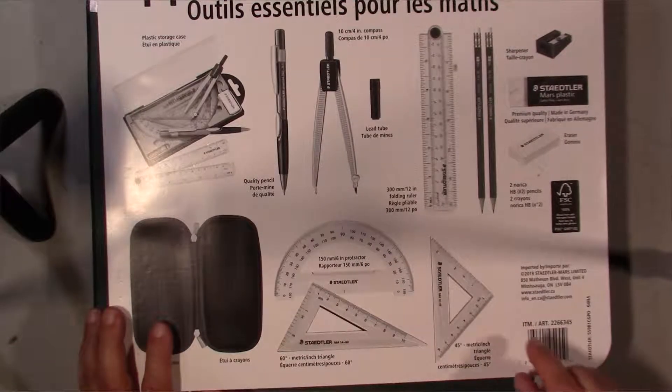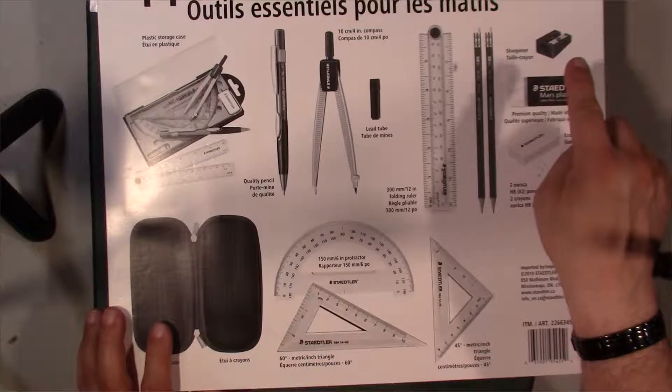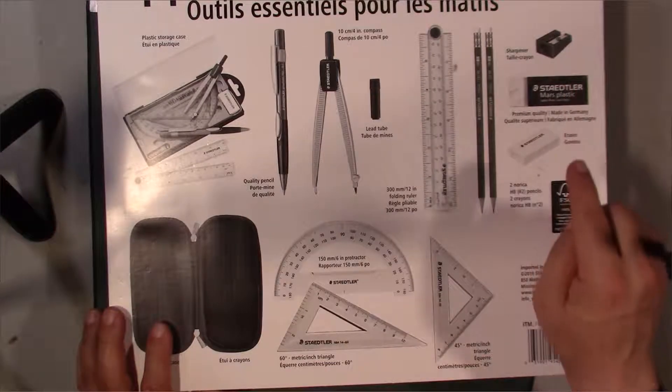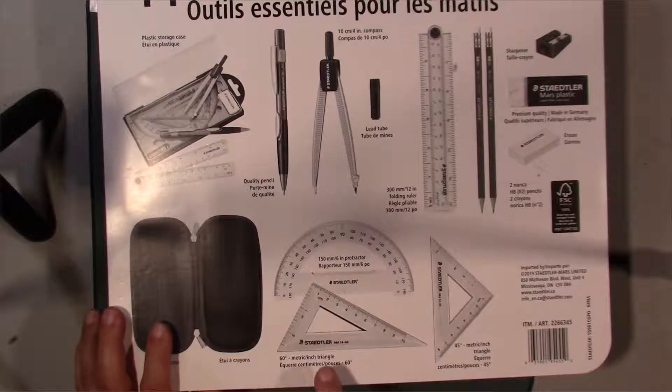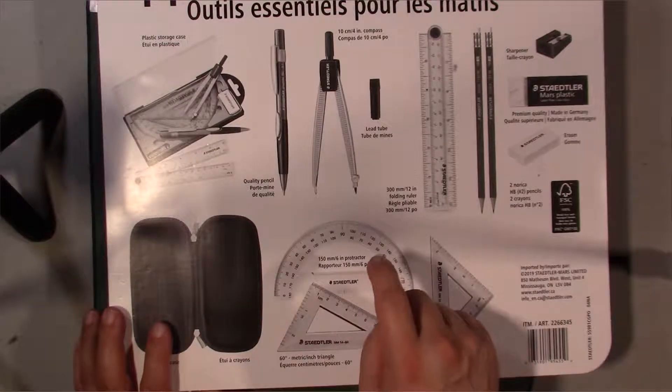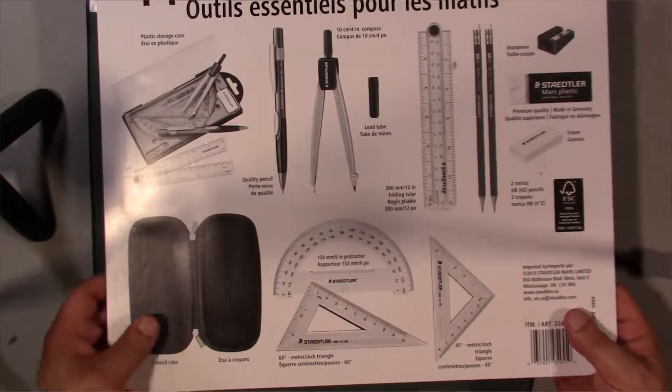So it looks like this actually has lead built into it, so we'll have to check that out. Of course, two pencils, a sharpener, eraser, then you've got a triangle, rectangular, and a protractor, and then of course you've got the case there.